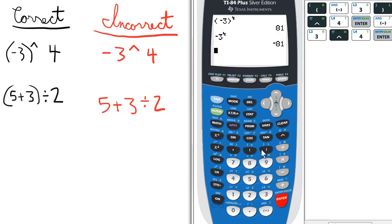Next example, we want to add 5 plus 3 and then divide by 2. So, to have 5 plus 3 as the numerator in a fraction, we enclose it in parentheses. Open parentheses, 5 plus 3, close parentheses.